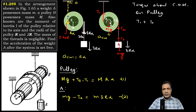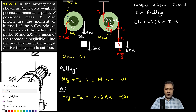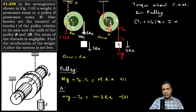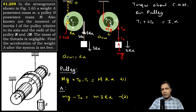So the torque equation is: T1·r + T2·2r = I·alpha, which gives us T1 + 2T2 = I·alpha/r. This is the third equation.